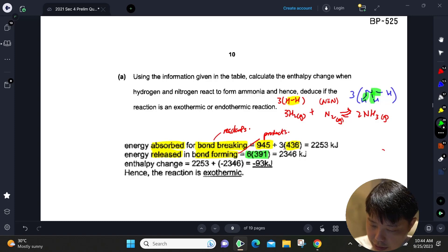Energy released - there should be a negative sign in front because it is exothermic. Bond breaking is energy absorbed, so there's a positive sign in front which we don't need to put. So we get a negative enthalpy change, which means that it is exothermic.